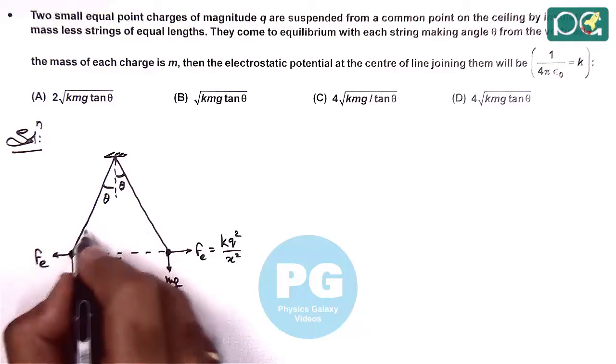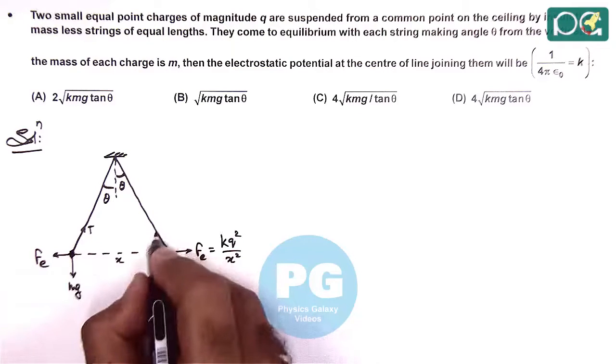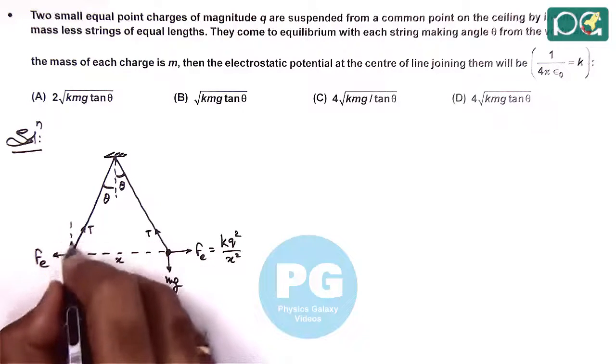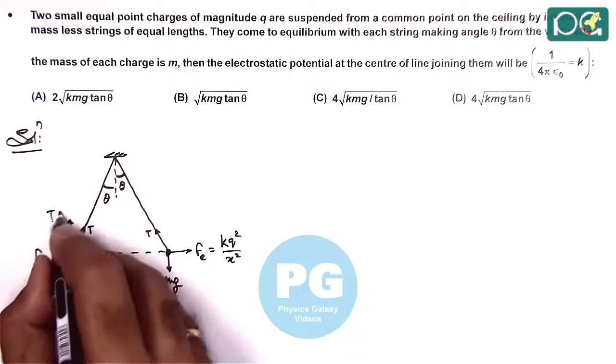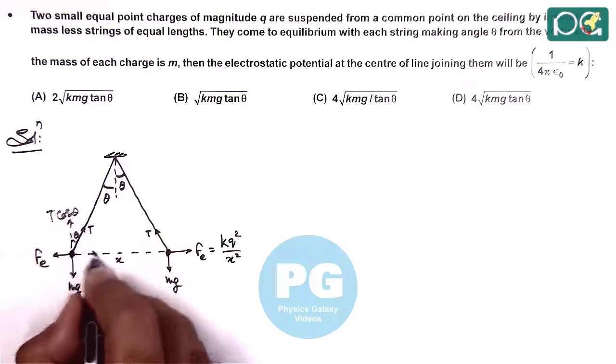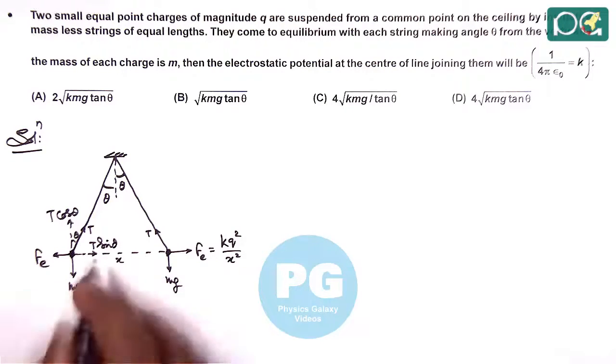In this situation, in equilibrium we can say if the string tension is T, we can draw a free body diagram. The vertical component is T cos theta, and the horizontal force on each charge is T sin theta.